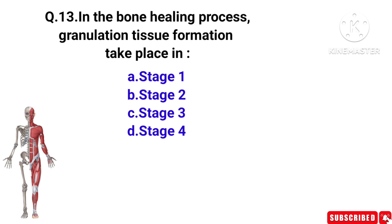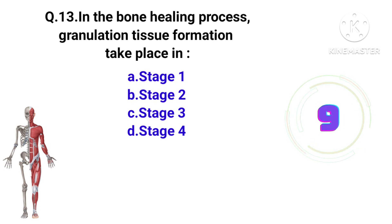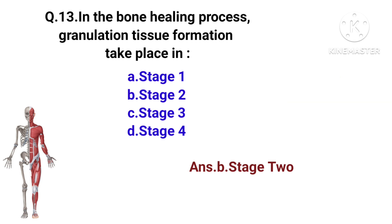Question number 13. In the bone healing process, granulation tissue formation takes place in stage 1, 2, 3, or 4? Following a fracture, secondary healing begins in 4 stages: stage 1 is hematoma formation, stage 2 is fibrocartilaginous callus formation, stage 3 is bony callus formation, and stage 4 is bone remodeling. So stage 2 is the right answer.